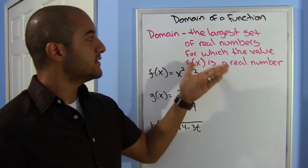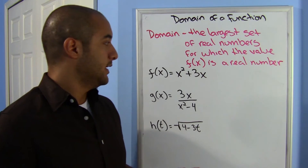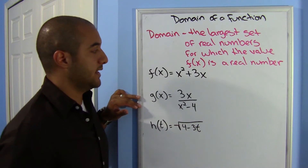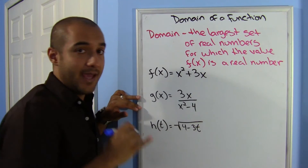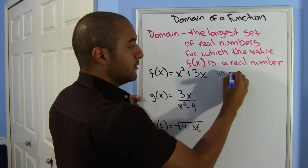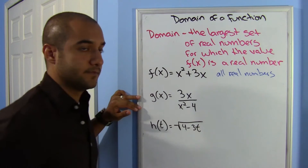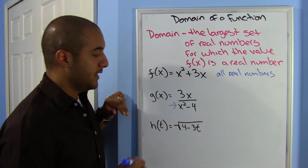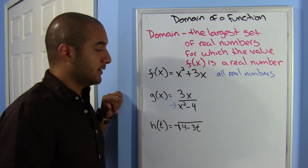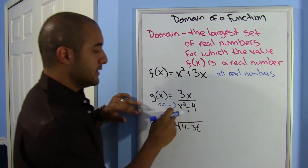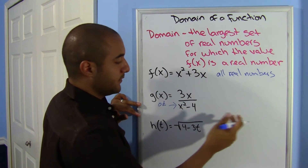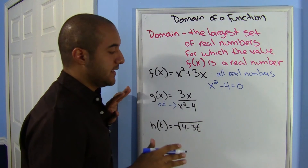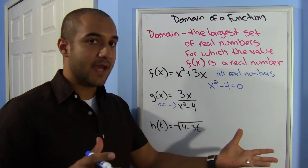Now we'll be looking at domain. The domain is the largest set of real numbers for which the value F(x) is a real number — you're talking about the X values. Here, F(x) equals 2x squared plus 3x. There are no restrictions; you can choose your x's to be anything you want, so the domain is all real numbers. For G(x) with a denominator, denominators can never be zero — that makes it undefined. So we find when x squared minus 4 equals zero.